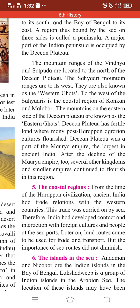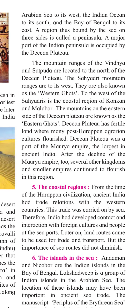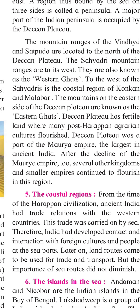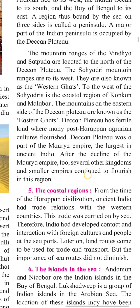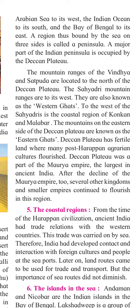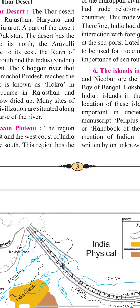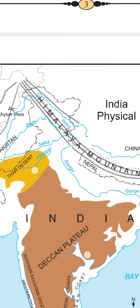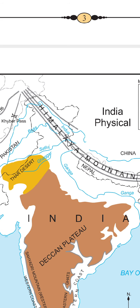To the west of the Sahyadri lies the coastal region of Konkan and Malabar. The mountain ranges on the eastern side of the Deccan Plateau are known as the Eastern Ghats. The Deccan Plateau has fertile land where many post-Harappan agrarian cultures flourished. The Deccan Plateau was also part of the great Maurya Empire, the largest empire in ancient India.